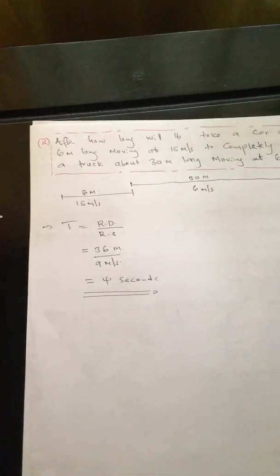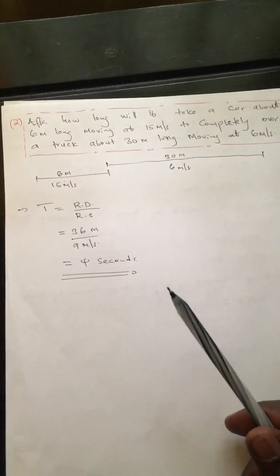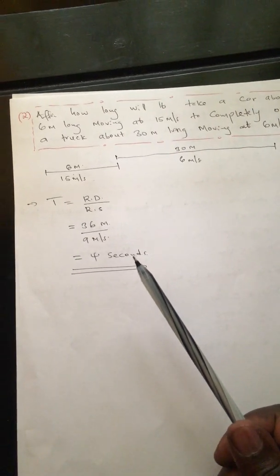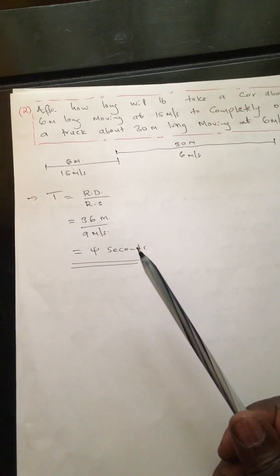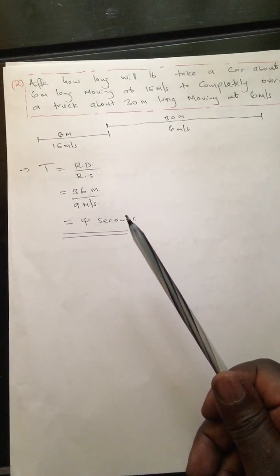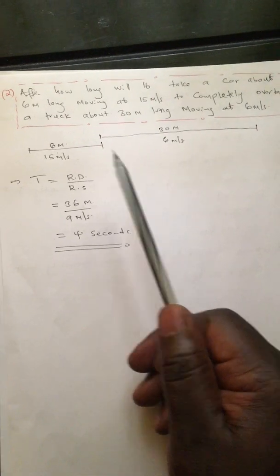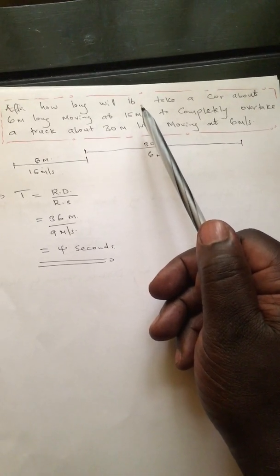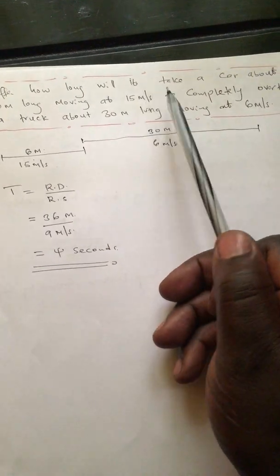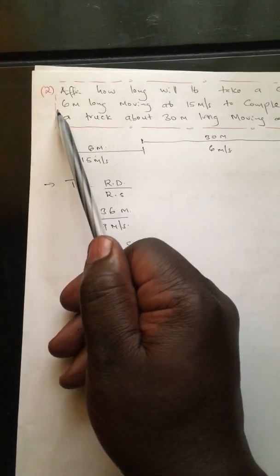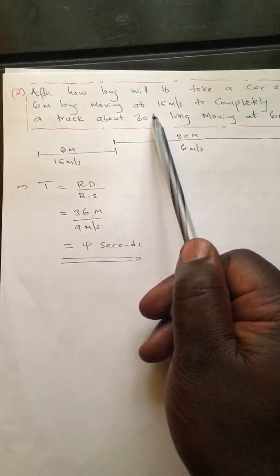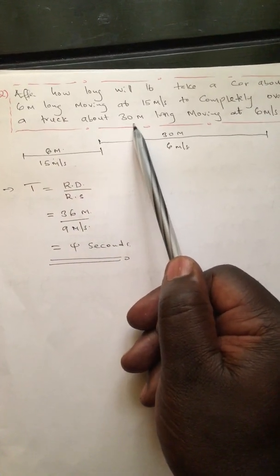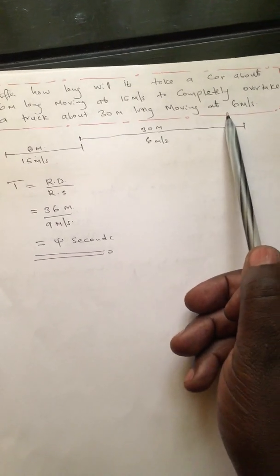The last example for this subtopic on bodies moving in the same direction involves bodies that are very close to each other, where you use their exact lengths. This is similar to the approaching bodies case. In this question: after how long will it take a car about 6 meters long, moving at 15 meters per second, to completely overtake a truck about 70 meters long, moving at 6 meters per second?